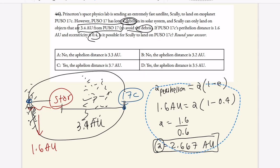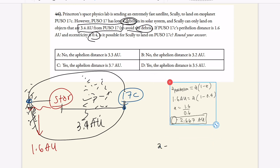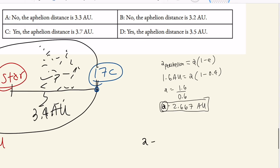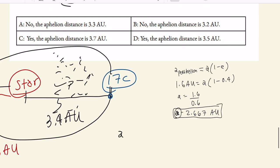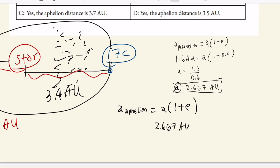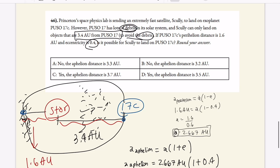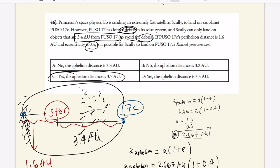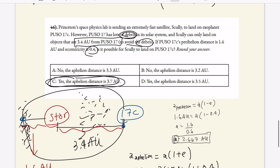So we have that aphelion distance is going to be A aphelion, which is going to be basically the ideal distance we want here, is equal to A times 1 plus E. So we have all our values. We have 2.667 AU times 1 plus 0.4 equal to A aphelion. And if we put this into our calculator, we're going to get that aphelion is equal to 3.733 AU. Now let's look at our answer options. So we have yes, the aphelion distance is 3.7 AU, which is what we want.